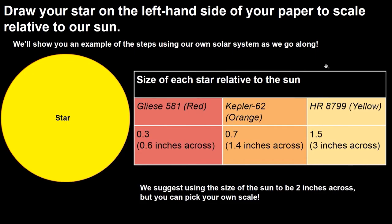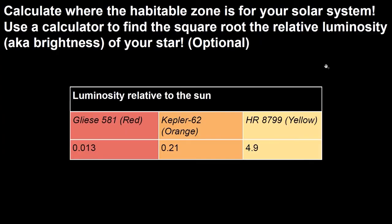To calculate where the habitable zone is in your solar system, we need to start with the luminosity or brightness of your star relative to our own sun. These luminosity values are listed in the table shown here. Write down the number that corresponds to your star because you'll need it later. You can see that both the red and orange stars are not as bright as our sun, but the yellow star is almost five times brighter. This means that for our red and orange star solar systems, the habitable zone will be closer to the star than in our yellow star solar system, which is very bright.